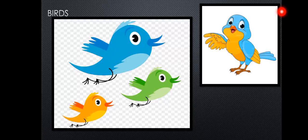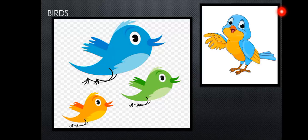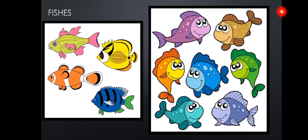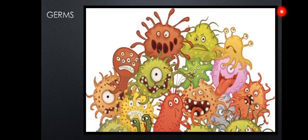The environment also contains birds. Birds are living things and we get different types of food from them, such as meat and eggs. Then we have fishes. Fishes live in water and we also eat different types of fish as food. The environment also includes small organisms called germs. Germs are harmful organisms which make us fall sick.